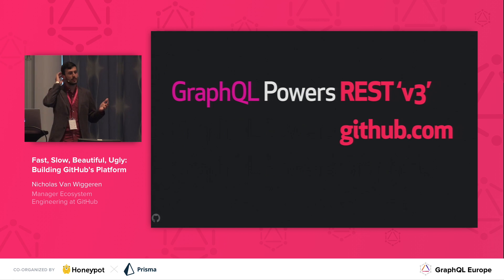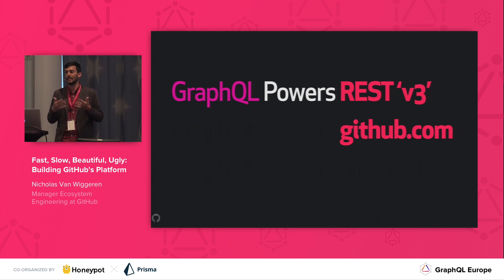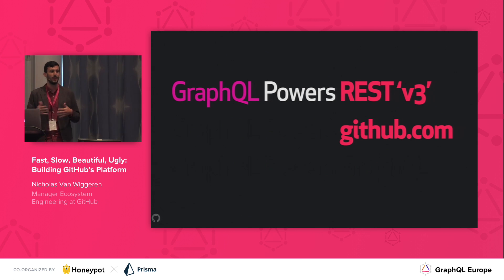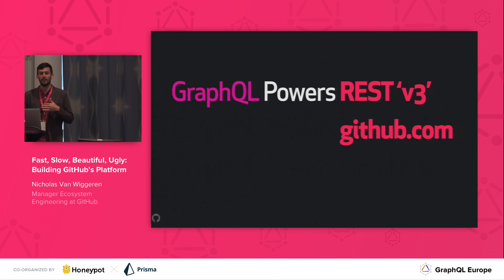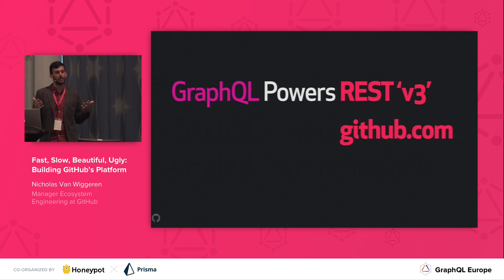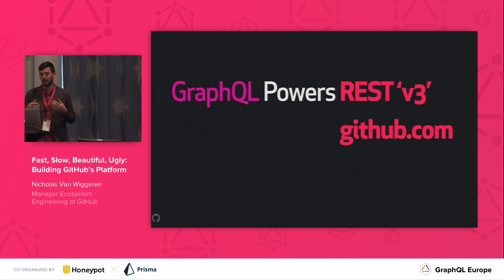GraphQL also powers GitHub.com. If you load a GitHub.com web page, chances are you're running at least one GraphQL query to fulfill that. What's interesting is that we're not using any JavaScript to do this — we're not querying over the web. This is all done inside of Ruby on Rails. We render our HTML with ERB, run a GraphQL query against the executor, it hits the GraphQL code in the same code base, produces the result, our fragments are co-located with our views, and you get HTML out — all based on that same GraphQL code.